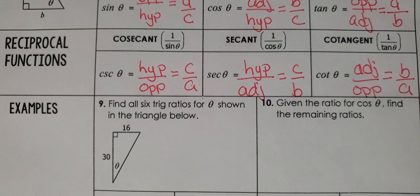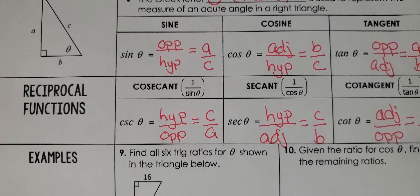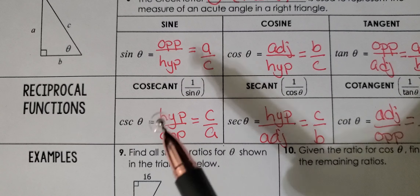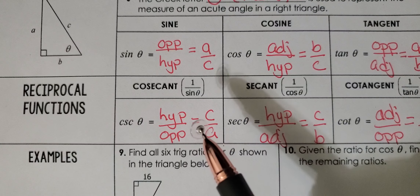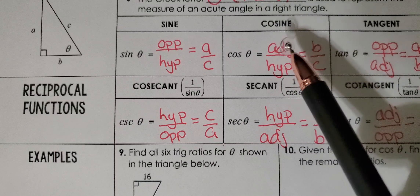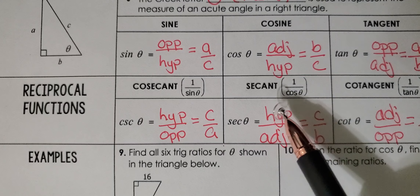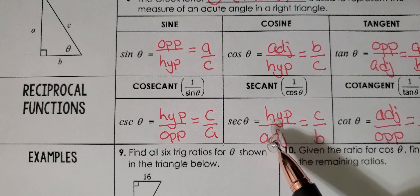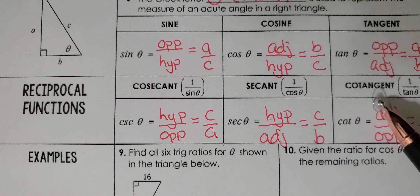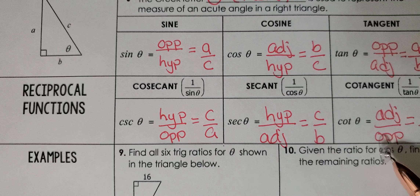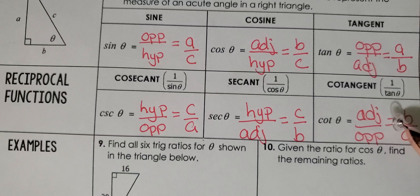Now the reciprocal functions. Think back to sixth grade math — to find a reciprocal of a number, you flip top and bottom. The reciprocal of the sine function is cosecant. So if sine was opposite over hypotenuse, cosecant is hypotenuse over opposite, which equals C over A. The reciprocal of cosine is secant, giving you hypotenuse over adjacent, or C over B. The reciprocal of tangent is cotangent, which is adjacent over opposite, or B over A.